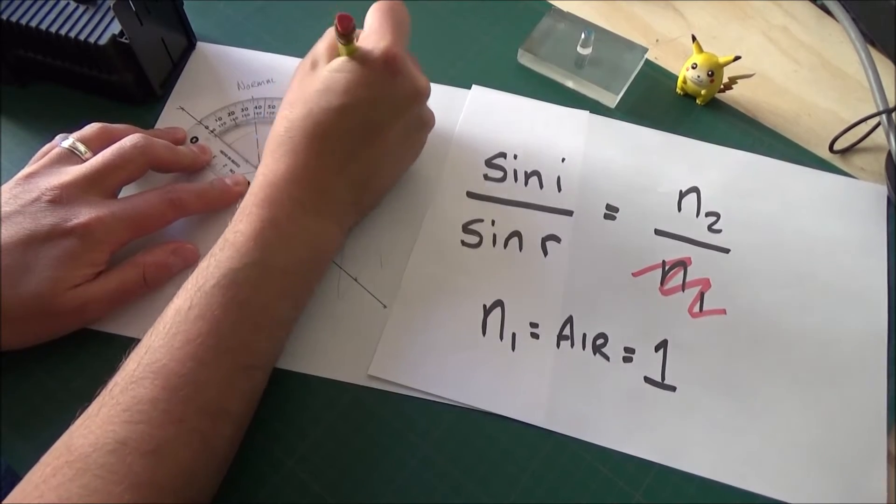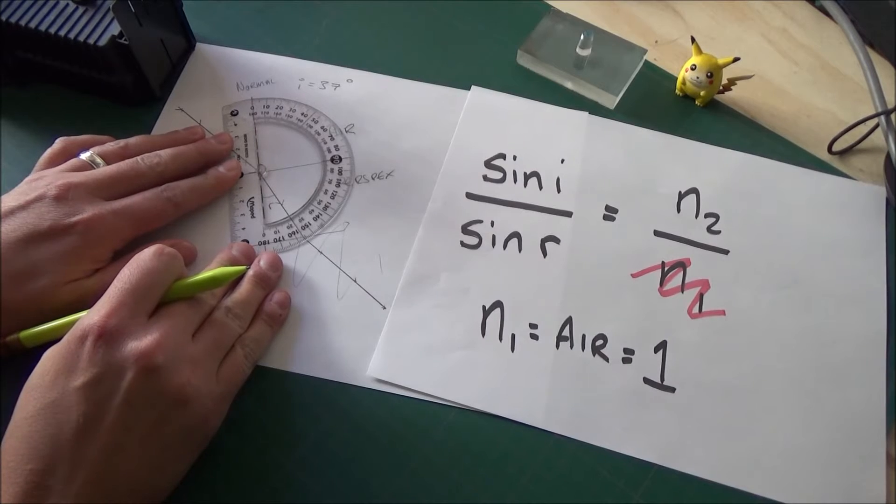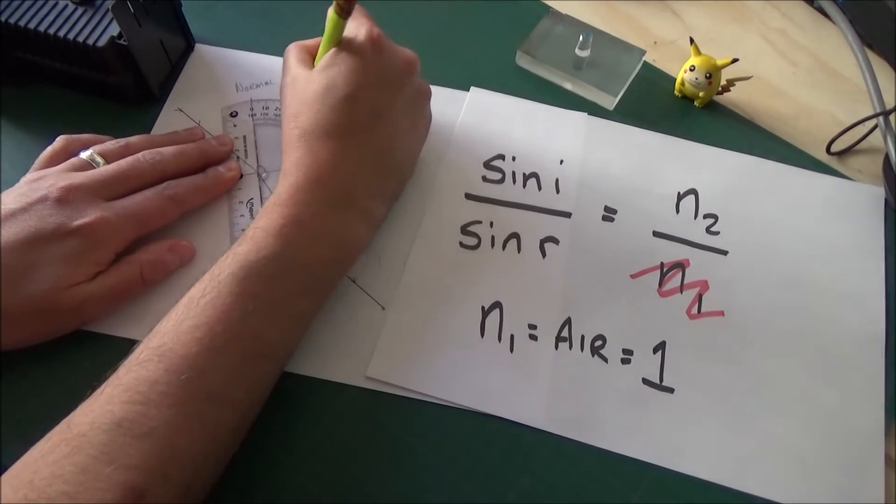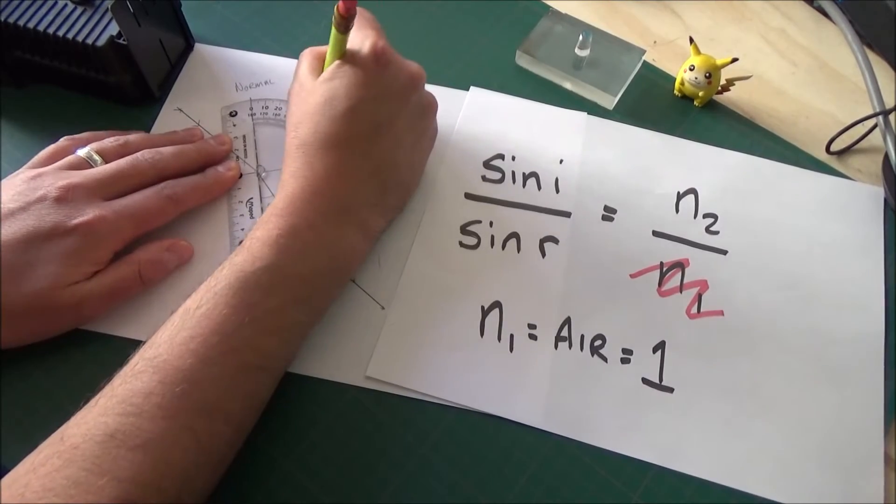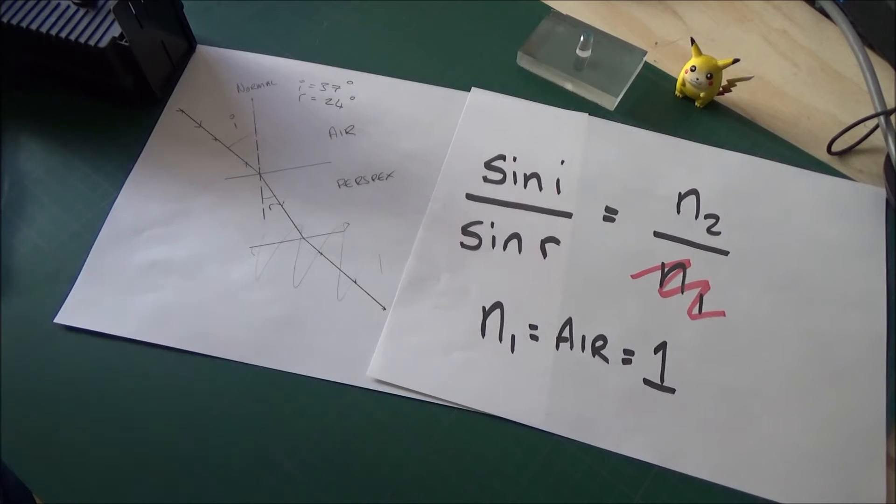Our first angle is the angle of incidence. That's 37 degrees. Again, I'm going to measure the angle of refraction. Take your time with that, and that's going to be 24 degrees. And we're going to use the equation we've got here. Sin i over sin r will give us our refractive index of the perspex.